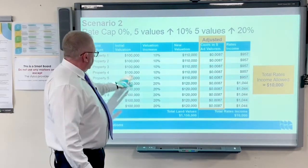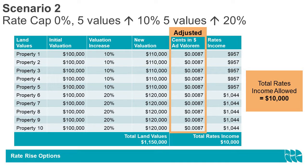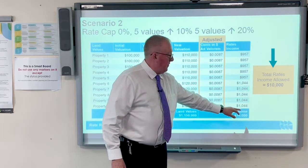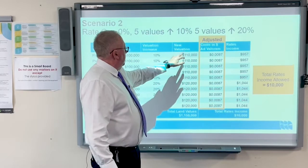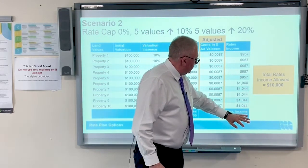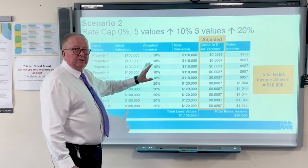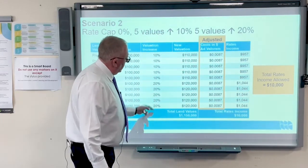Now, if we assume the 10 properties start at $100,000 but some go up by 10% and some by 20% — the top five are now valued at $110,000 and the bottom five at $120,000, giving a total land value of $1.15 million. Dividing that into our total rate pool of $10,000 gives a new rate in the dollar, the ad valorem. Multiplying that by each property's valuation gives the new rate amount. Those properties with the smaller 10% increase actually saw their rates come down from $1,000 to $957, while those that went up by 20% will pay more — a 4.4% increase in their rates.